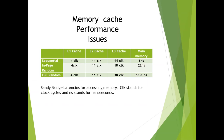Here's data from a Sandy Bridge processor showing latencies for accessing memory. Looking at sequential, page-random, or full-random access patterns: it takes 4 clock cycles to get data from L1 cache, 11 clock cycles from L2. From L3 you start seeing a big difference — sequential is much faster than full random, because with full random you've probably got a TLB miss and it has to recalculate the virtual-to-physical address mapping. Look how much worse it gets when you have to go to main memory.